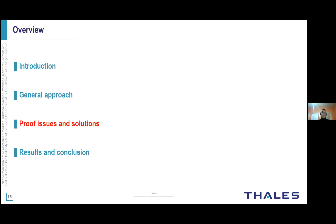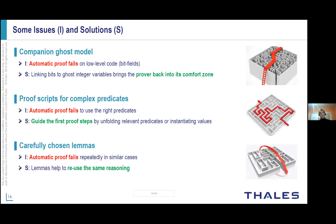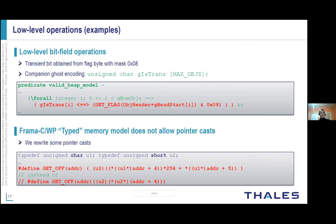Scalability is a major concern in our case. We use a couple of techniques to leverage the power of automation of the provers we use. For instance, we use ghost code to bring the provers back to their comfort zone regarding low-level manipulations in our code. We also use proof scripts and carefully chosen lemmas to help the provers perform the proof. Lemmas are preferable in some cases because scripts may require some redundant manual operations, but it depends on the cases. Here is an example of low-level operations we face in the implementation.